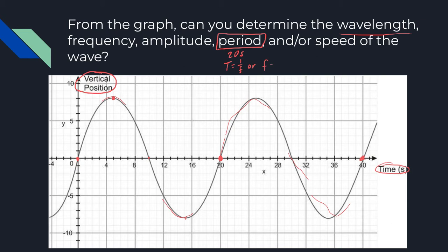From the period we can get frequency, because frequency equals one over the period. Putting in 20 for the period: 1 divided by 20 gives us a frequency of 0.05 hertz, or cycles per second. If it takes 20 seconds to complete a full period, it makes sense that we don't get through very many cycles in a second.